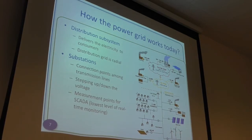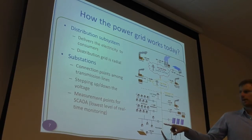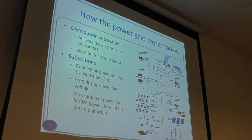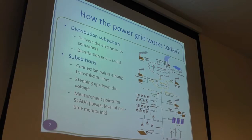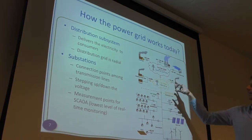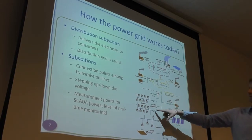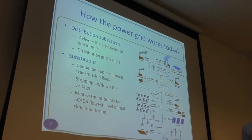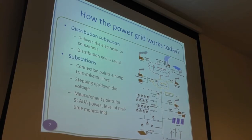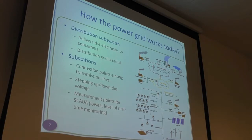The lack of connections between distribution networks is something you'd like to introduce in future power networks, because it would give you the possibility to supply power if a substation goes down. But it becomes complicated with power flows and relays. At the higher levels these are transformers, and at some level they're called substations — stepping up or down the voltage — but this is also where you have measurement points for what is called SCADA, a monitoring system.